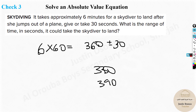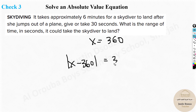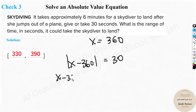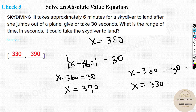Solving formally: Case 1: X minus 360 equals 30, so X equals 390. Case 2: X minus 360 equals negative 30, so X equals 330. The range of time is 330 seconds to 390 seconds. The key step here is converting minutes to seconds before writing your equation, so both values are in the same unit.